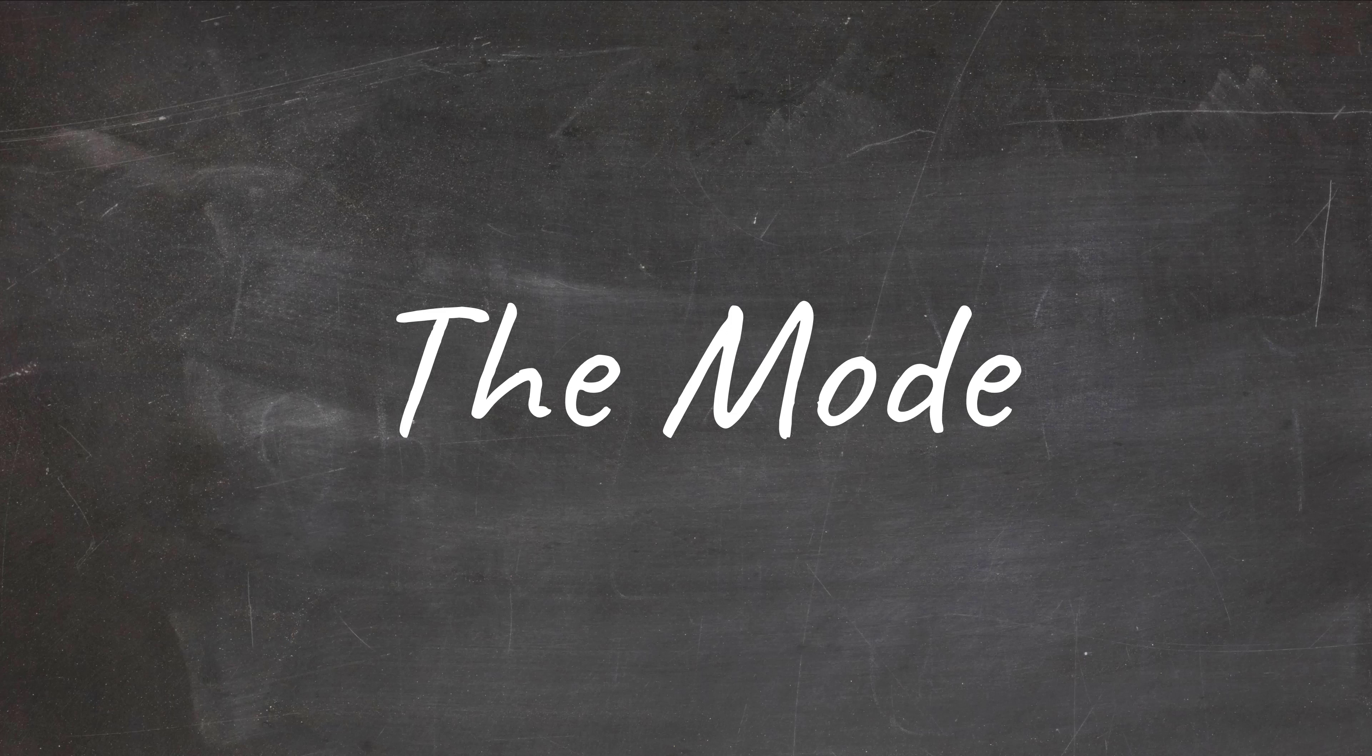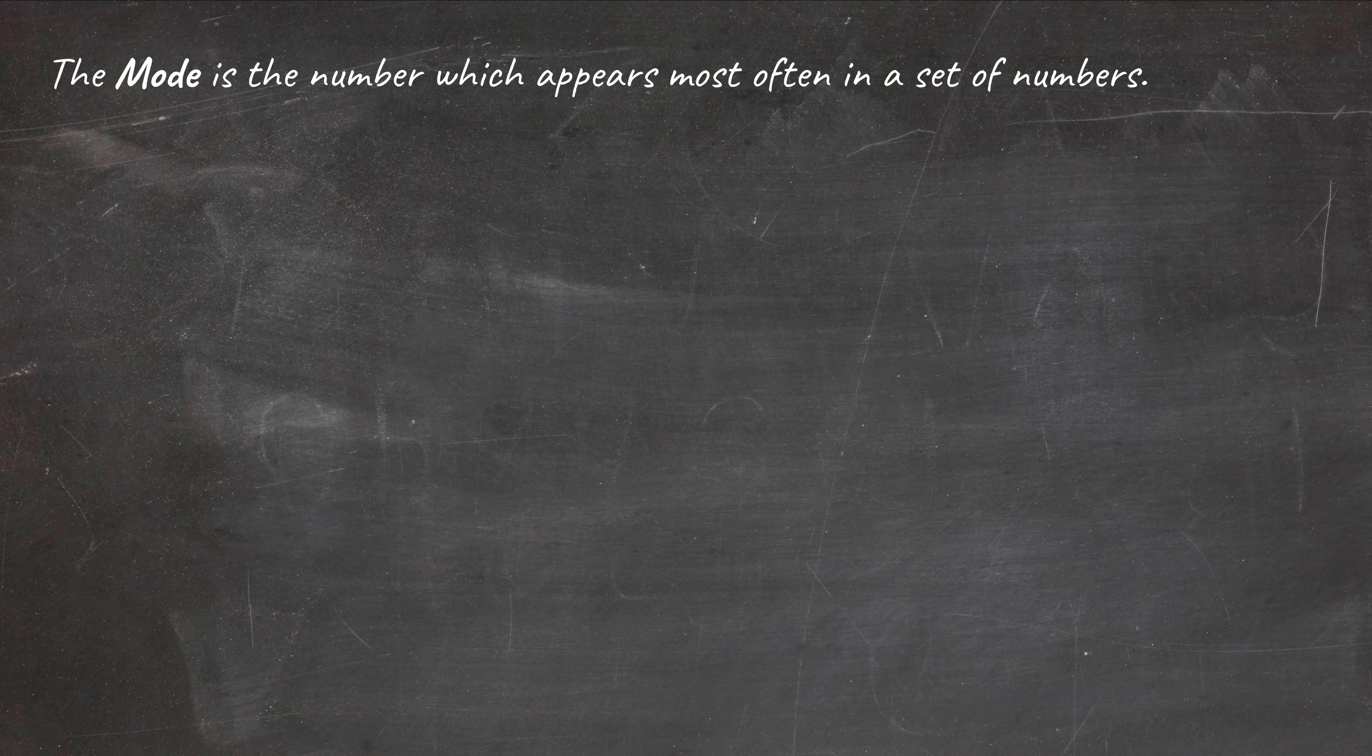The mode is the most common value in a data set. It's the number which appears most often in a set of numbers.